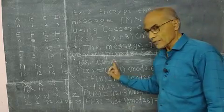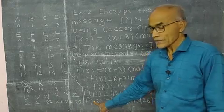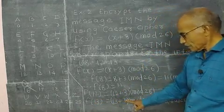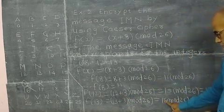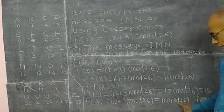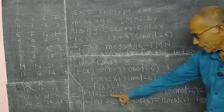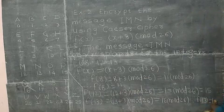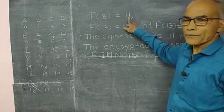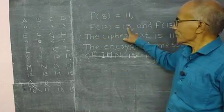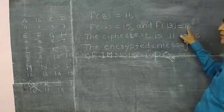And lastly, 13. F of 13. That means x is equal to 13. 13 plus 3, mod 26. That is 16, mod 26. Again, 16 is less than 26. Therefore f of 13 is equal to 16. So f of 8 is equal to 11, f of 12 is equal to 15, and f of 13 is equal to 16. In this way, the ciphertext is 11, 15, 16.